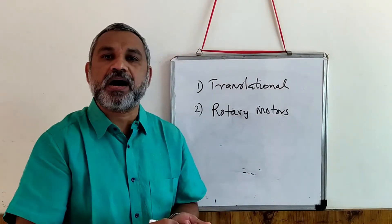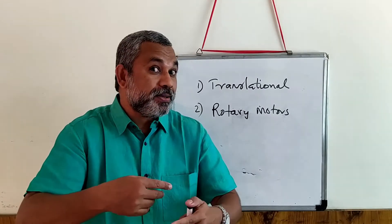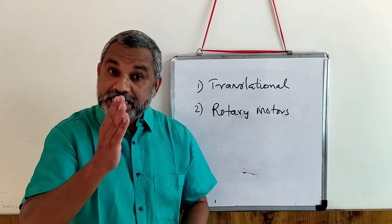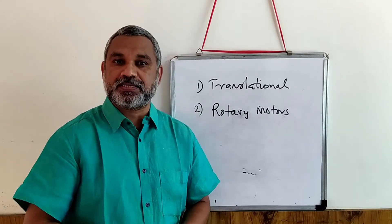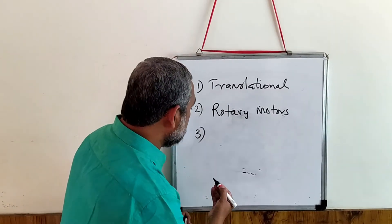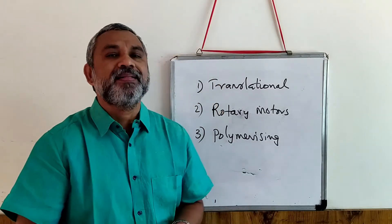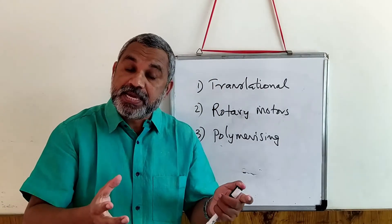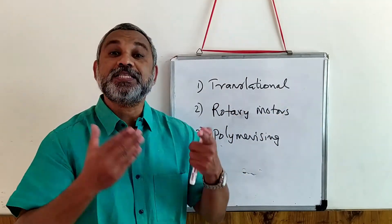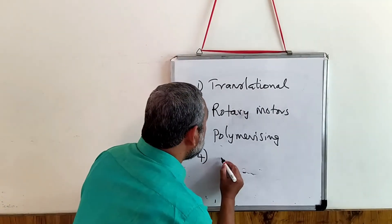The second kind of motor is what we call a rotary motor. Rotary motors use rotation to create a torque, and that torque is used to drive or transport things. For example, cilia and the classic example F0-F1 complex are examples of rotary motors. The third type of motor is called the polymerizing motor. In certain organisms, actin can be polymerized and that polymerization drives the molecule forward — that is another kind of motor.